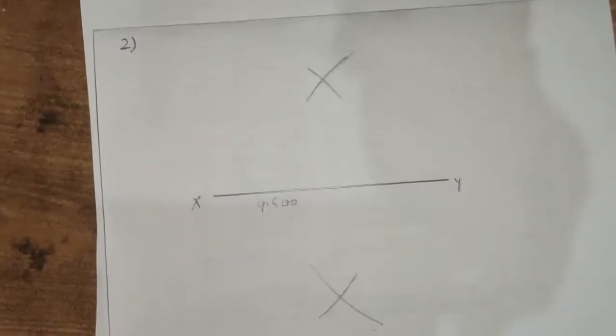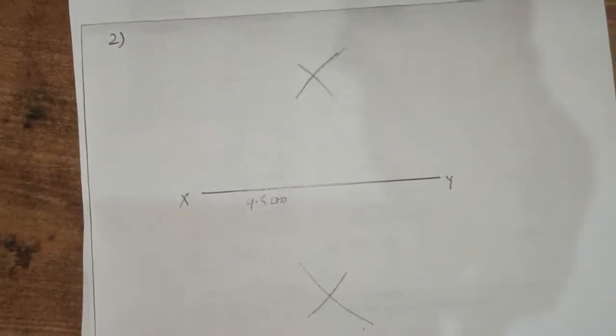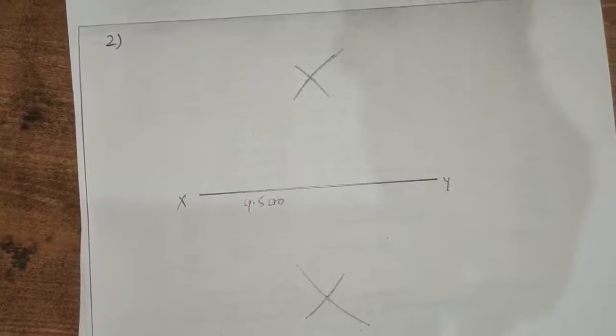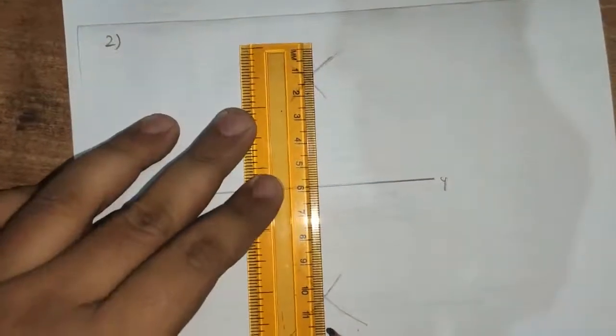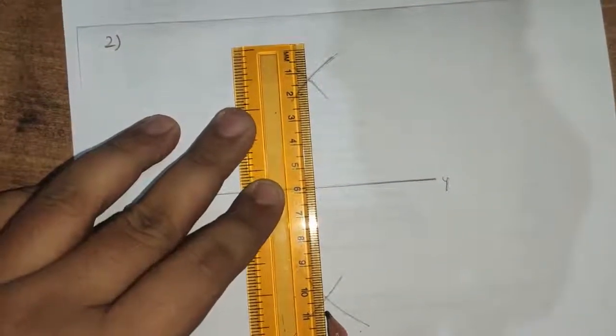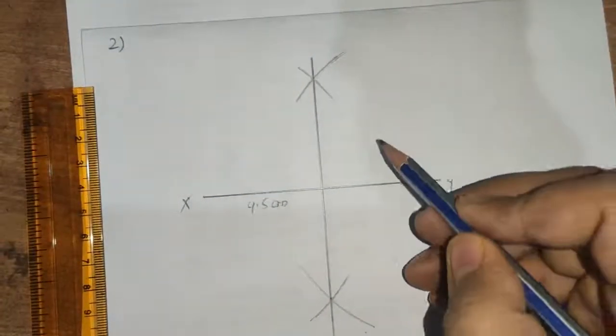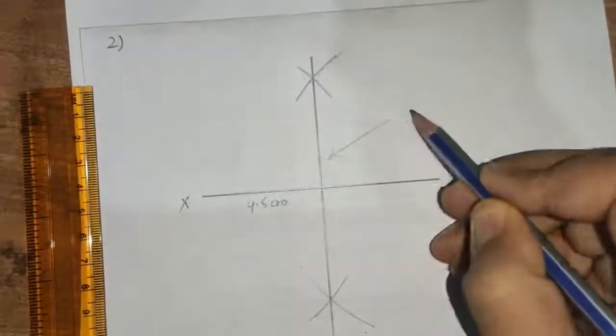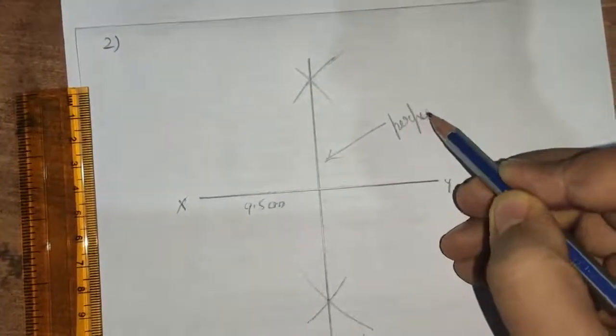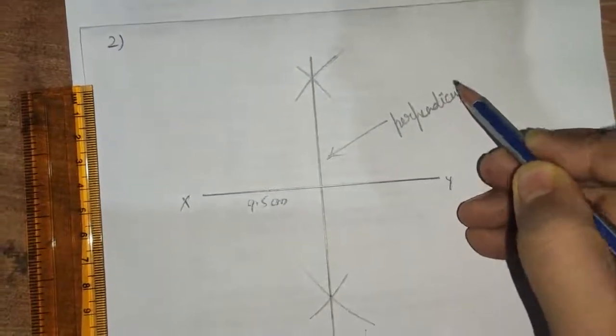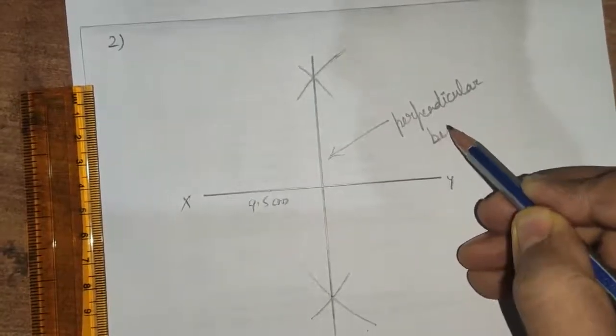Now, you will join these two points and this is the perpendicular bisector of the line. This line is the perpendicular bisector. Label it.